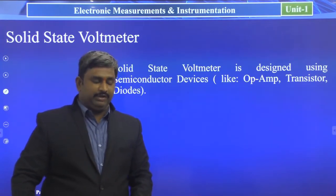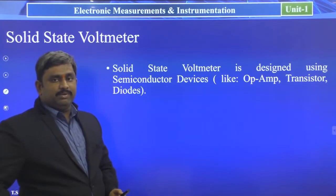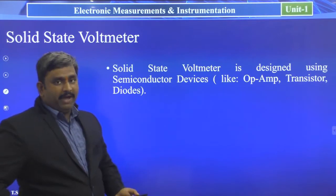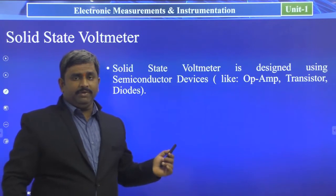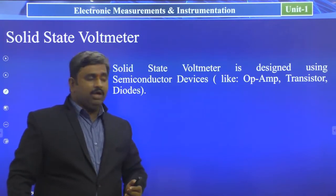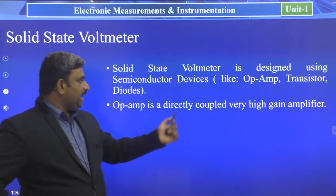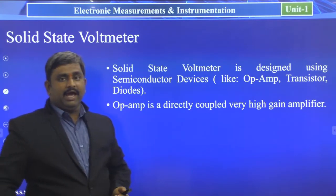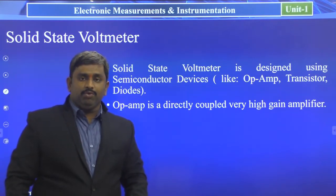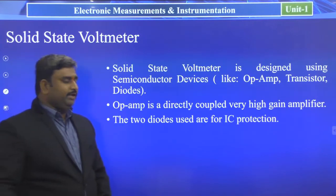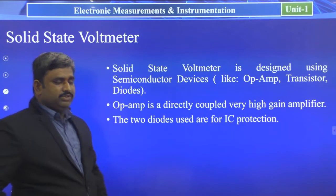Solid state voltmeters are designed using semiconductor devices like op-amps, transistors, and diodes. The op-amp is a directly coupled, very high gain amplifier, which gives more accurate information about voltage measurement. We also use two diodes in this circuit for protection purposes.